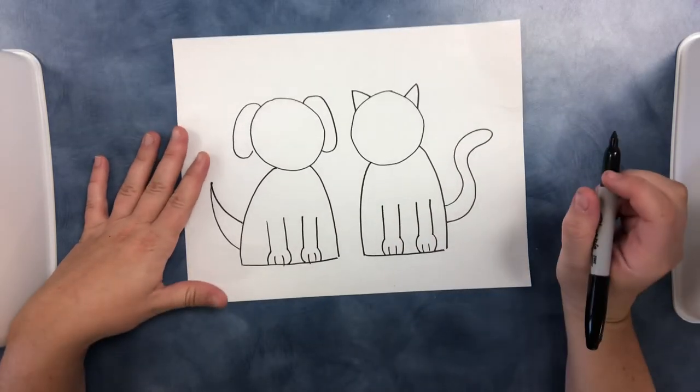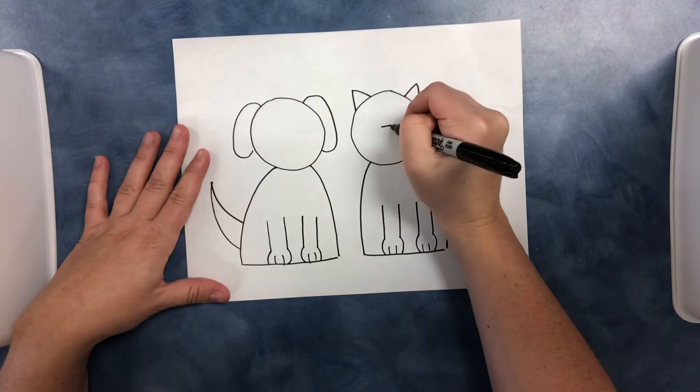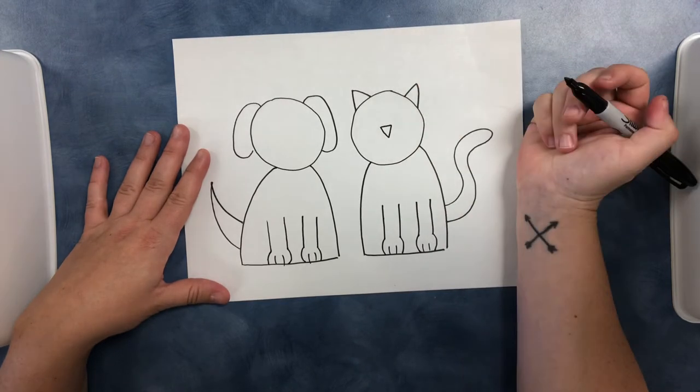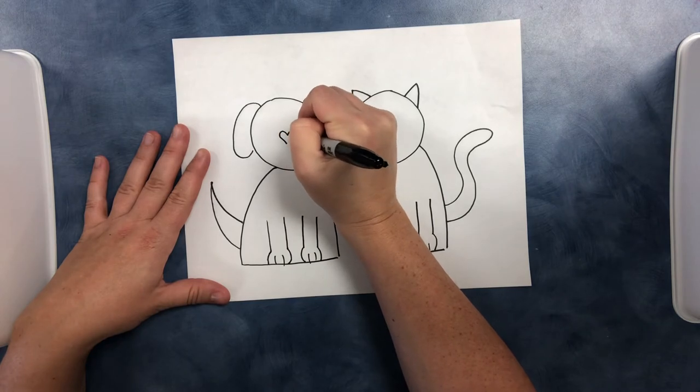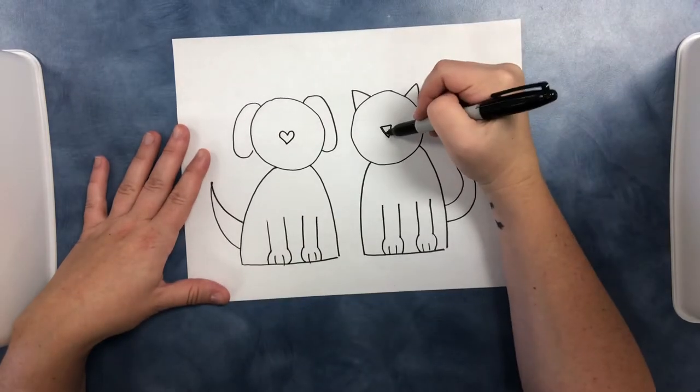Hey they're looking pretty good. All right, for the kitty's nose we're going to do a triangle right in the middle. For the doggy's nose we're going to do a heart right in the middle and you can color those in.